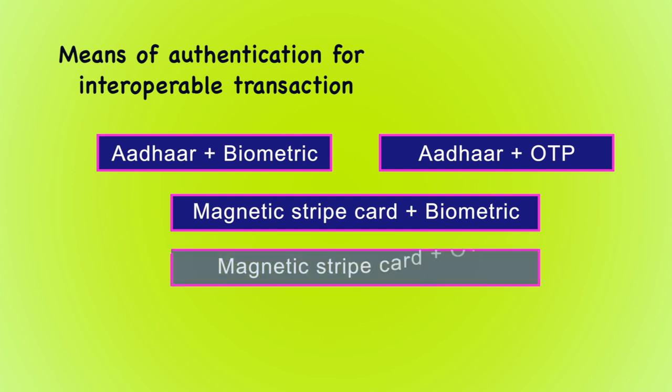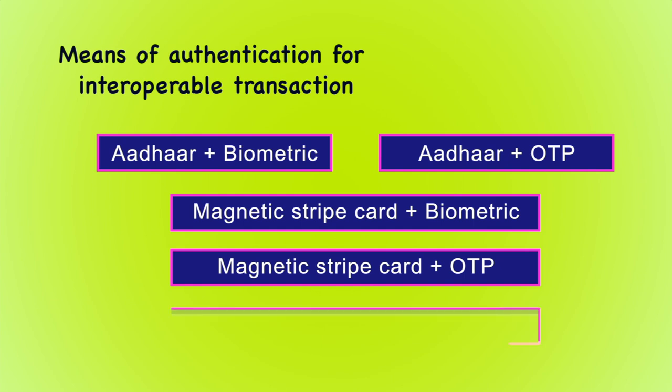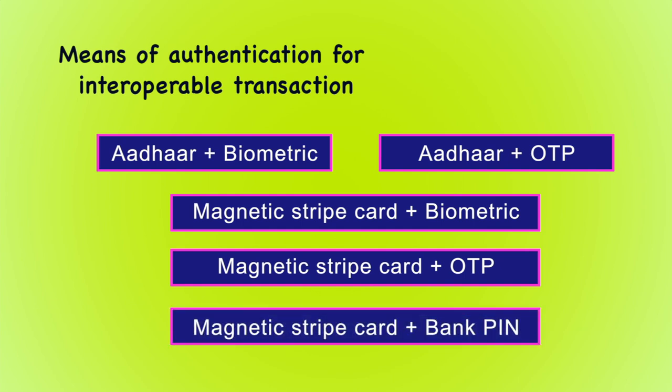The fourth one is Magnetic Strip Card plus OTP. And the fifth one is Magnetic Strip Card plus Bank PIN.